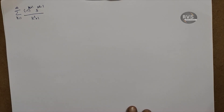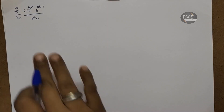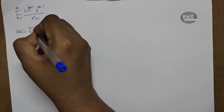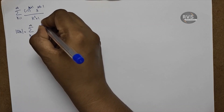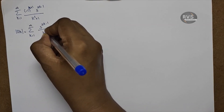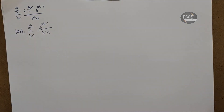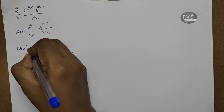Check the question. We will use the ratio test. We need to find the modulus of u_k and the modulus of u_{k+1}. For u_{k+1}, we substitute k plus 1 into the formula 3 raised to 2k minus 1 over k squared plus 1. This is not directly the modulus, so we must apply the ratio test carefully.